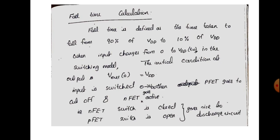Fall time is defined as the time taken to fall from 90% of VDD to 10% of VDD. That means from 90% of the higher voltage to 10% of the higher voltage. In the switching model, when input changes from 0 to VDD at time T equal to 0, the initial condition at the output is Vout(0) equal to VDD.